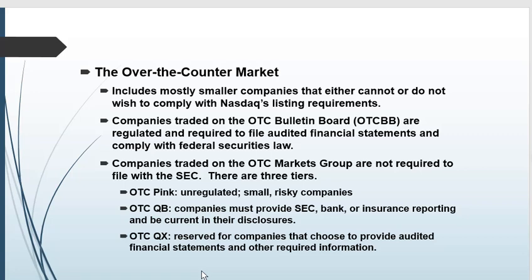The NASDAQ includes many large companies, not just smaller ones, as well as many companies that trade on this computerized network. Below that are the OTC pink markets, which are unregulated, very small, and risky. The QB tier requires some reporting and current disclosures. The QX tier consists of companies that choose to provide audited statements. These are all typically very small companies that most investors won't be interested in.